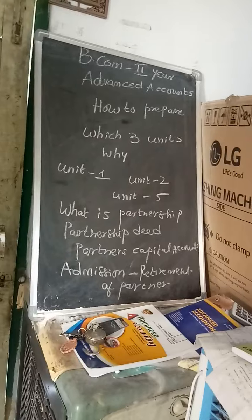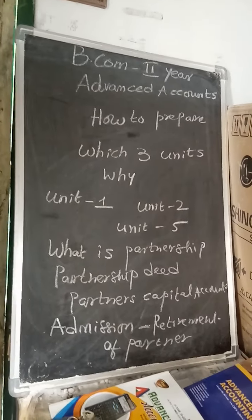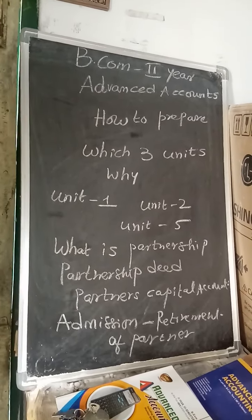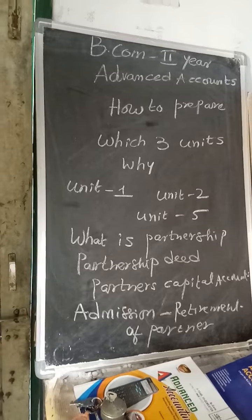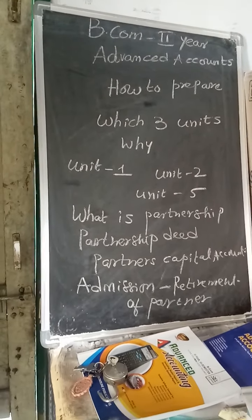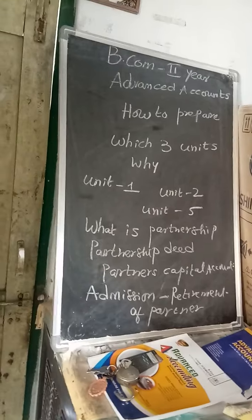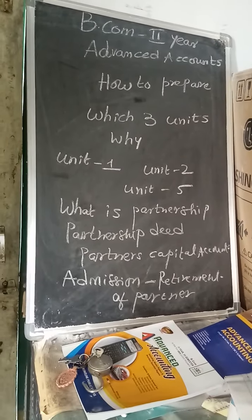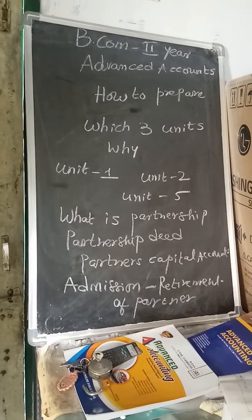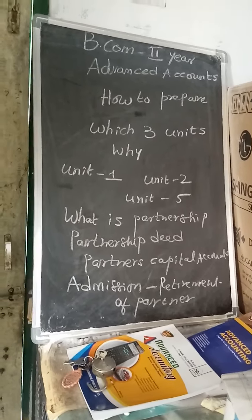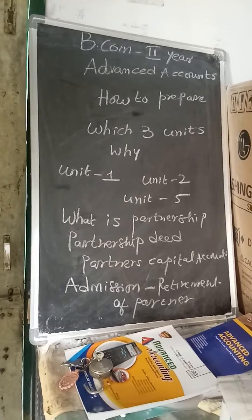Important questions from Units 1 and 2 include: the partnership deed and its contents, how partners share profits and losses in the absence of a partnership deed, what is the revaluation account, and the sacrificing ratio and gaining ratio. When a partner is admitted we calculate the sacrificing ratio, and when a partner is leaving the firm we calculate the gaining ratio. These two ratios are very important and you are likely to get a short answer question on them.